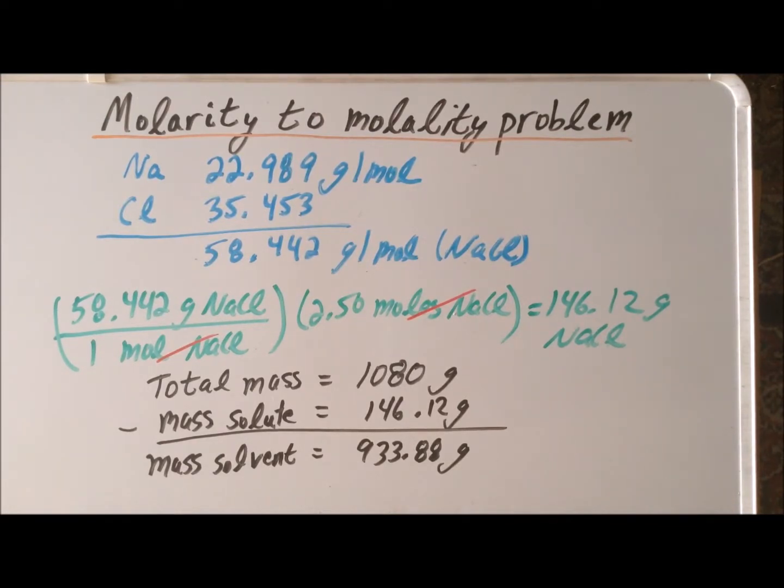Why do we need that in our calculation? Well, molarity is the number of moles per volume of the solvent, whereas molality involves the mass of the solvent. So in any molality problem, at some point, to correctly solve the problem, we must determine the mass of the solvent itself.